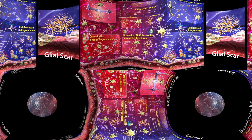Glial scar formation is a process where reactive astrocytes produce factors that lead to astrocyte proliferation and creation of a barrier across the injured area to establish a boundary between nervous and non-nervous tissue. The glial scar prevents further microbial invasion, limits peripheral immune cell infiltration, and allows regeneration of blood capillaries by stimulating revascularization to increase neurotrophic and metabolic support of the damaged nervous tissue.